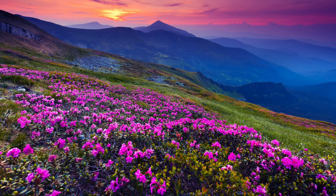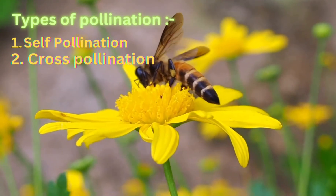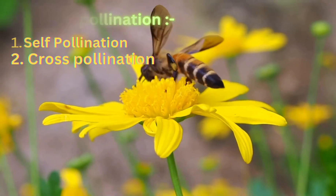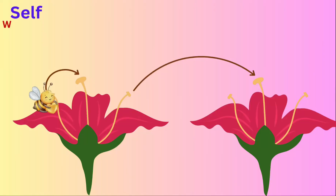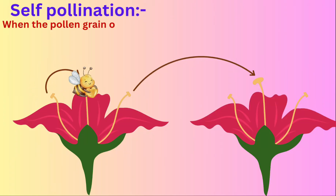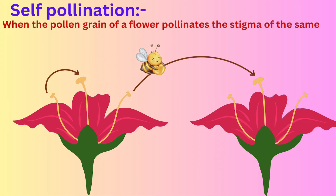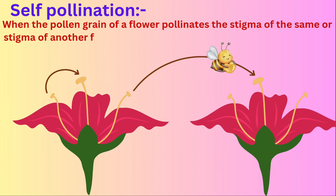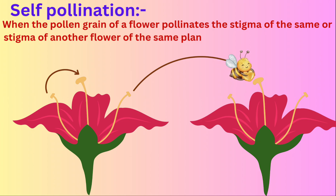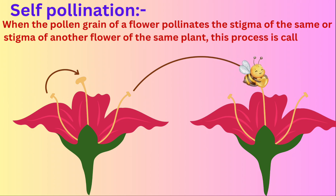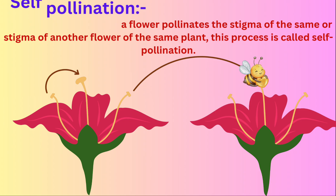There are mainly two types of pollination: self-pollination and cross-pollination. Self-pollination occurs when the pollen grain of a flower pollinates the stigma of the same flower, or the stigma of another flower of the same plant. Examples include wheat, rice, and apricots.